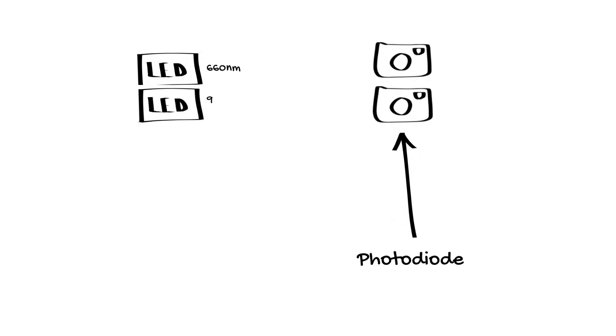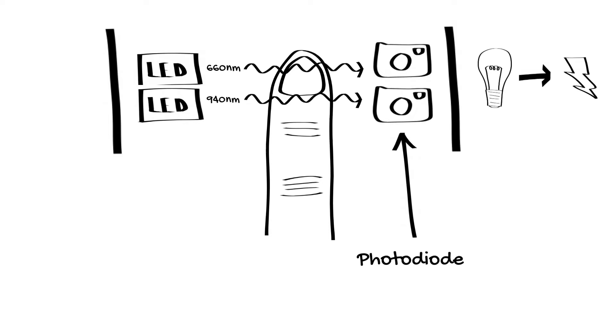We then have a pair of photodiodes or light sensors which detect how much light of each wavelength has passed through the tissues and converts this to an electrical signal. These sensors are surrounded by an opaque case to minimize the ambient light signal.